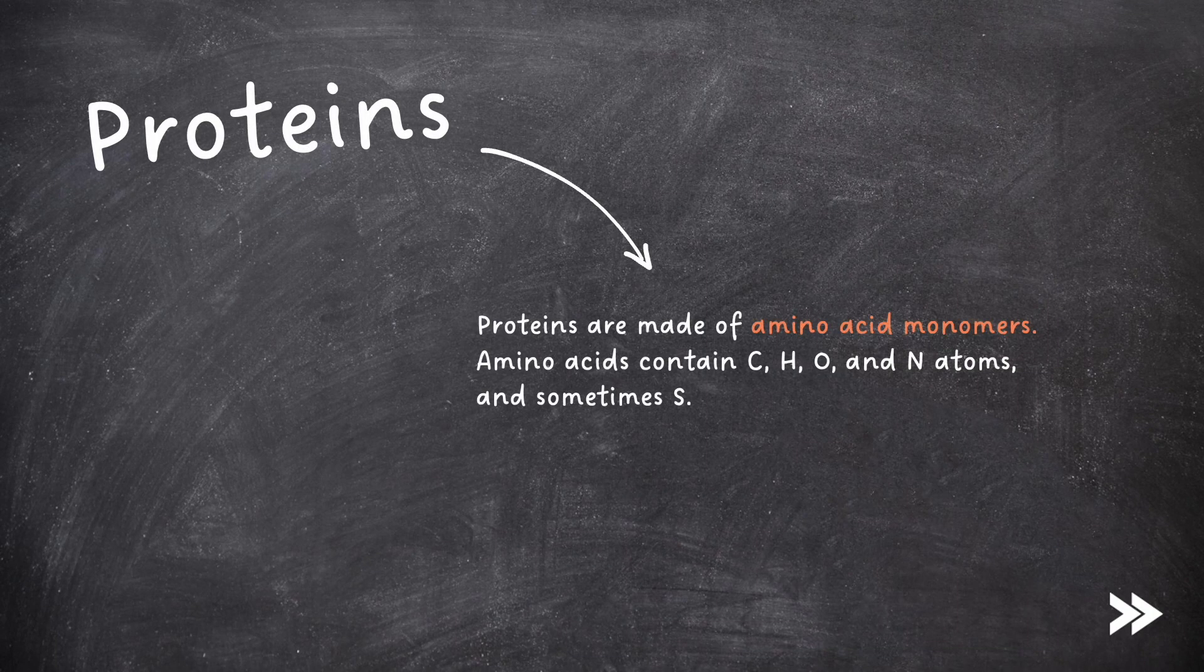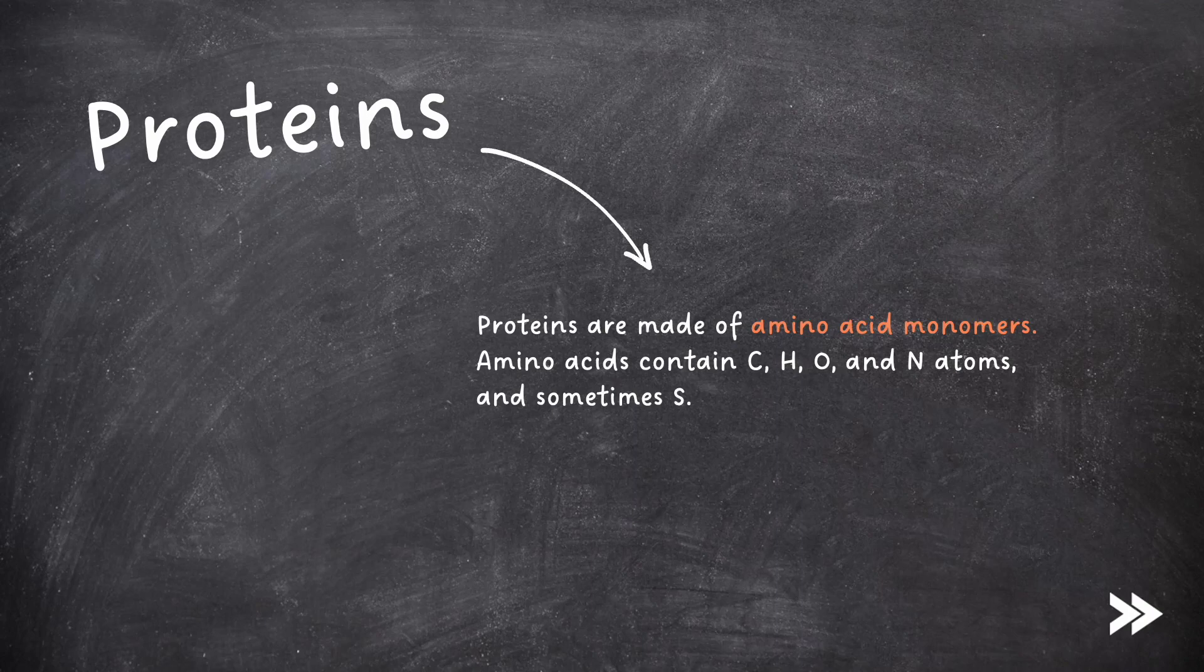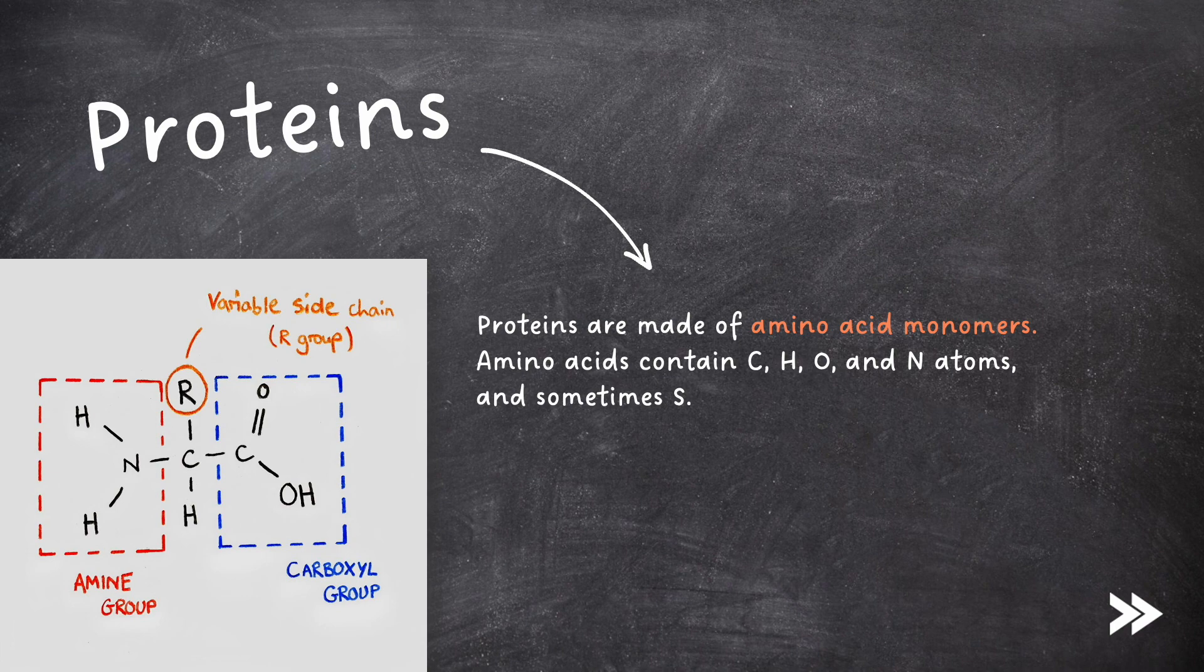Proteins are made of amino acid monomers. Amino acids contain carbon, hydrogen, oxygen and nitrogen atoms, and sometimes sulfur. The specification wants us to learn the general structure of amino acids.